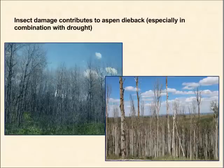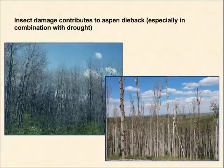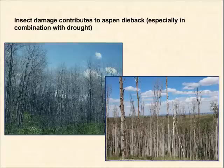In addition, insects can contribute to Aspen dieback. On the left is an example of forest tent caterpillar defoliation — successive years of defoliation can contribute to crown dieback. In the lower right is a case in the Intermountain West where bark beetles in combination with drought are contributing to decline of Aspen stands.